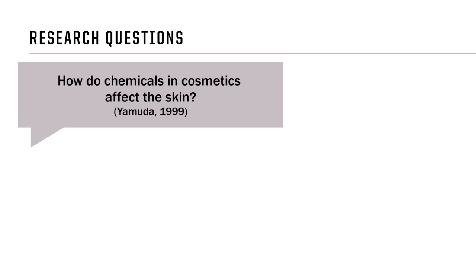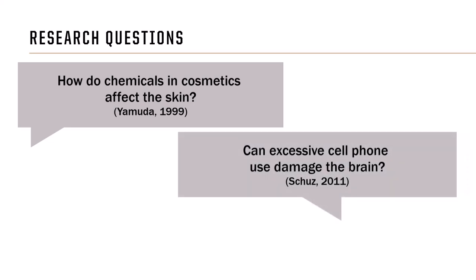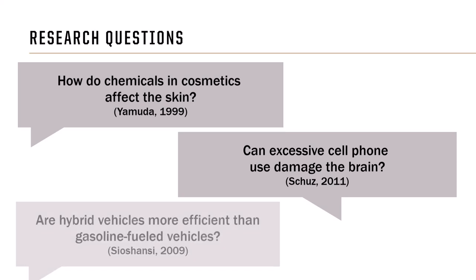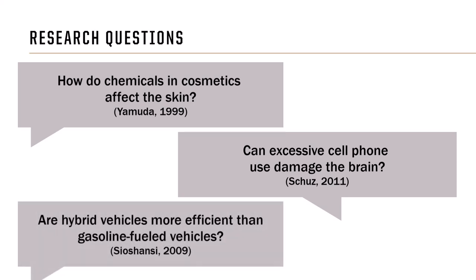What sorts of questions guide empirical studies? Empirical researchers seek to understand reality through direct observation and measurement. Some research questions that have been addressed by empirical analysis include: how do chemicals in cosmetics affect the skin? Can excessive cell phone use damage the brain? And are hybrid vehicles more efficient than gasoline-fueled vehicles? Links to these studies and more are available on the research guide highlighted at the end of this video.